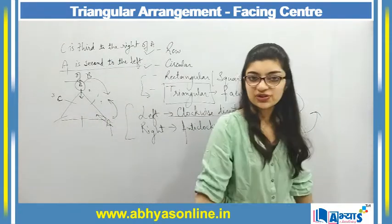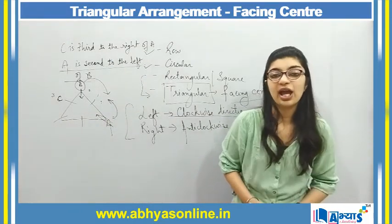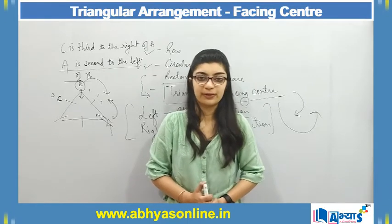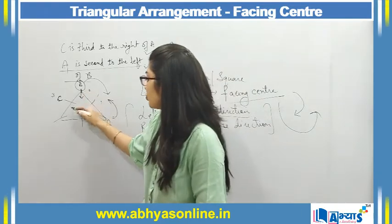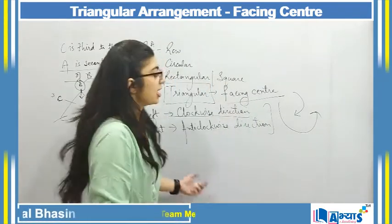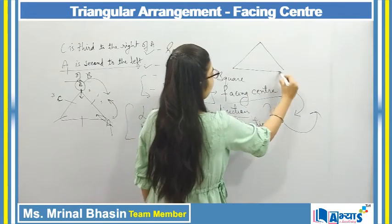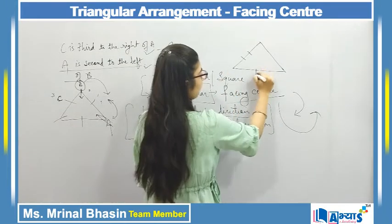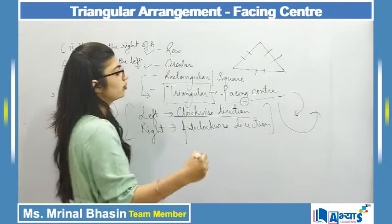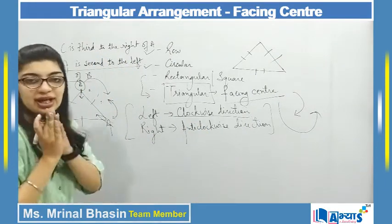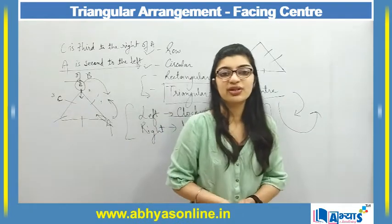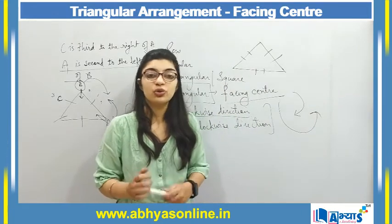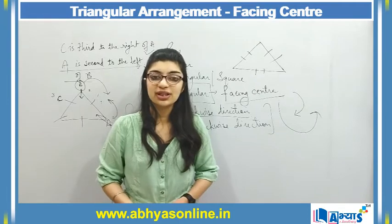This is the general introduction to triangular sitting arrangement. It is also possible that a triangle has two persons seated on each side — one at each corner and one in the middle of each side — allowing six persons to be arranged. That depends on the question. As you have instructions given, you have to solve accordingly. Questions of this type are very important.